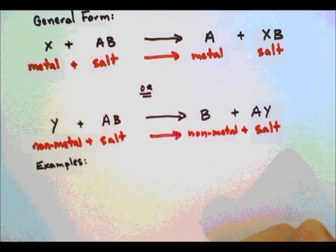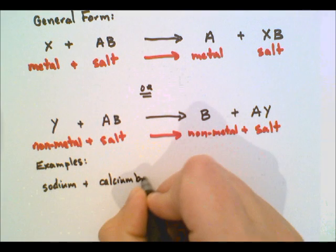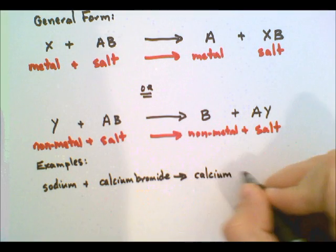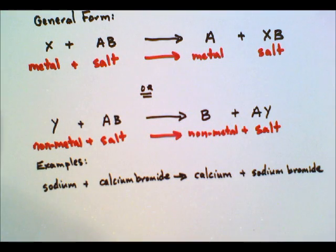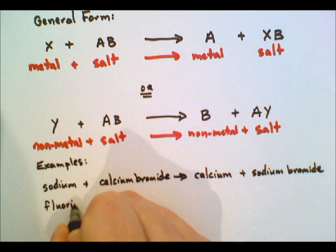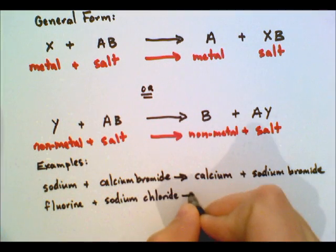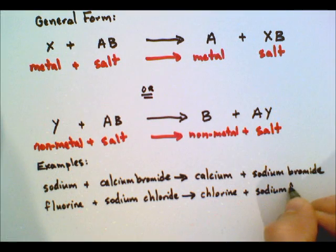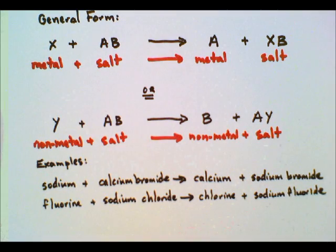Some examples: first, sodium and calcium bromide — a metal and an ionic compound, also referred to as a salt. This produces calcium and sodium bromide; the sodium and the calcium switch places. In the second example, we have fluorine and sodium chloride. Fluorine is a non-metal, so it takes the place in the non-metal reaction — the fluorine and the chlorine switch — and we get our individual products.